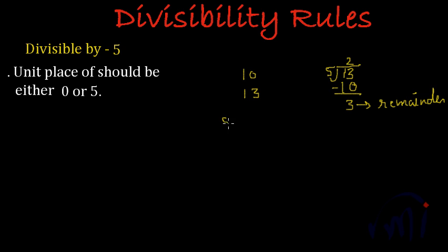And if I write something like 5,435, this also has 5 at units place, so it will be divisible by 5. And if you want, we can divide and check it. So let's do that. So 5,435 when I divide it by 5, 5 once a 5, remainder is 0. Let's note down the 4. 4 is not divisible by 5, so I'll put a 0 and note down the next number.